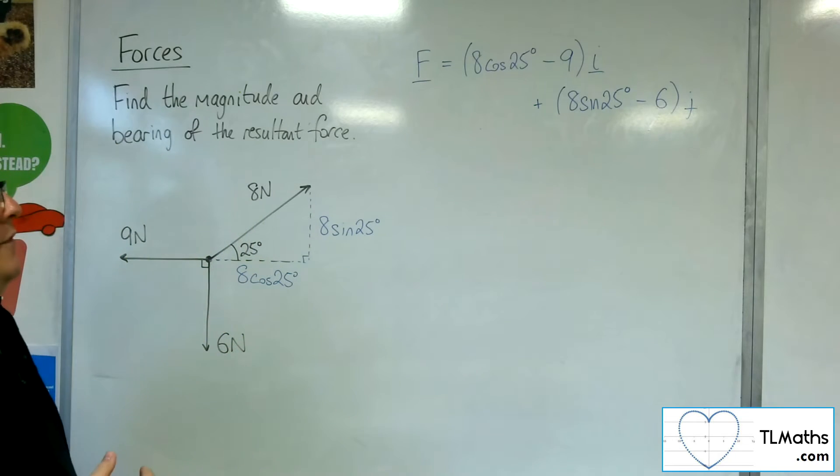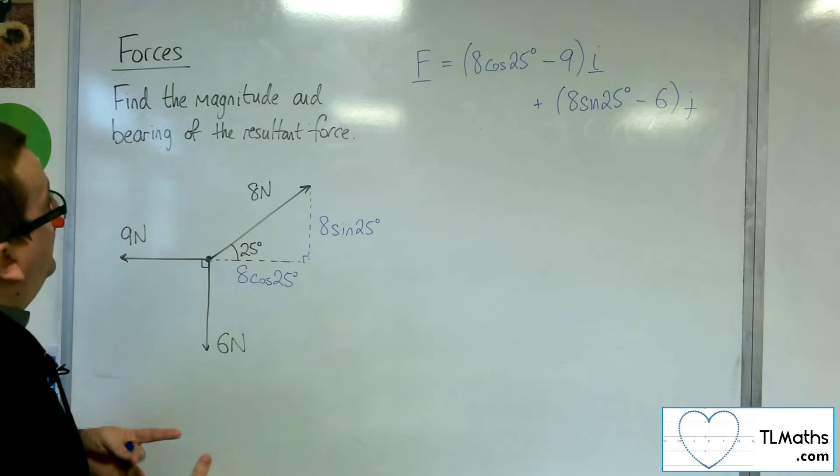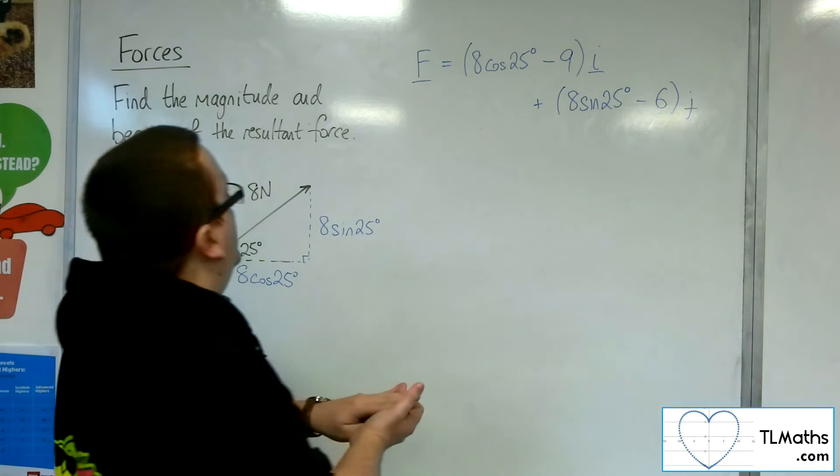8 cos 25 take away 9, i, plus 8 sin 25 take away 6, j. So what I need to do is define the magnitude and the bearing of this force.